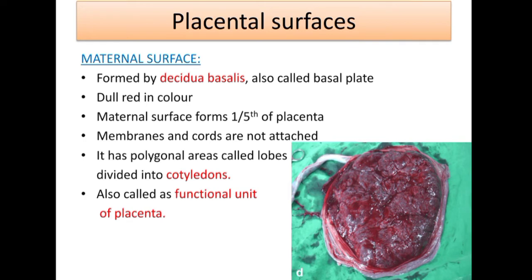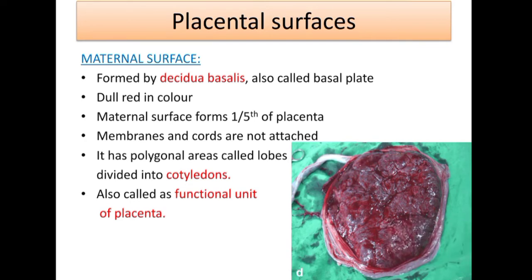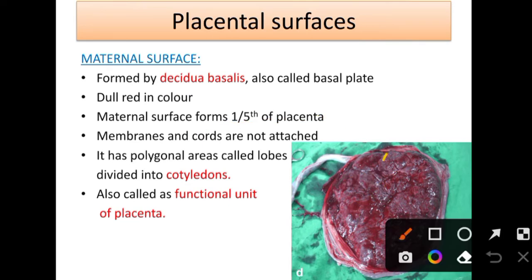When demonstrating the placenta, we always start from the maternal surface. The maternal surface is formed by decidua basalis, also called the basal plate. As you can see in the picture, it is dull red in color, and it forms one-fifth of the placenta. No membranes or cords are attached to it. The polygonal areas visible on it are called lobes or cotyledons.